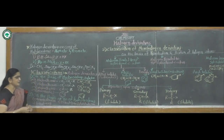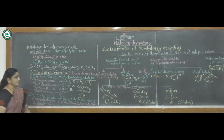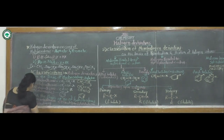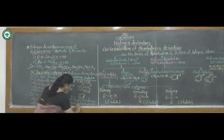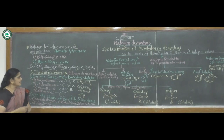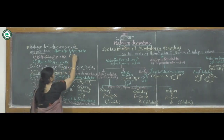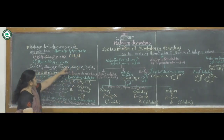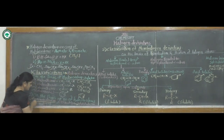The next classification is on the basis of number of halogen atoms. These are classified as: first, monohalogen derivative; second, dihalogen derivative; third, trihalogen derivative; and fourth, polyhalogen derivative. Monohalogen derivative means a compound containing only one halogen atom. For example, CH3Cl contains only one halogen atom, hence it is a monohalogen derivative.